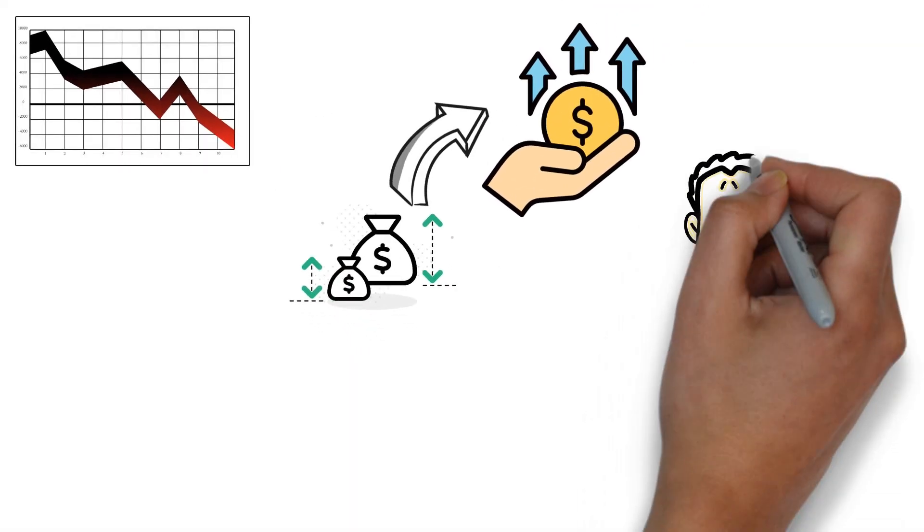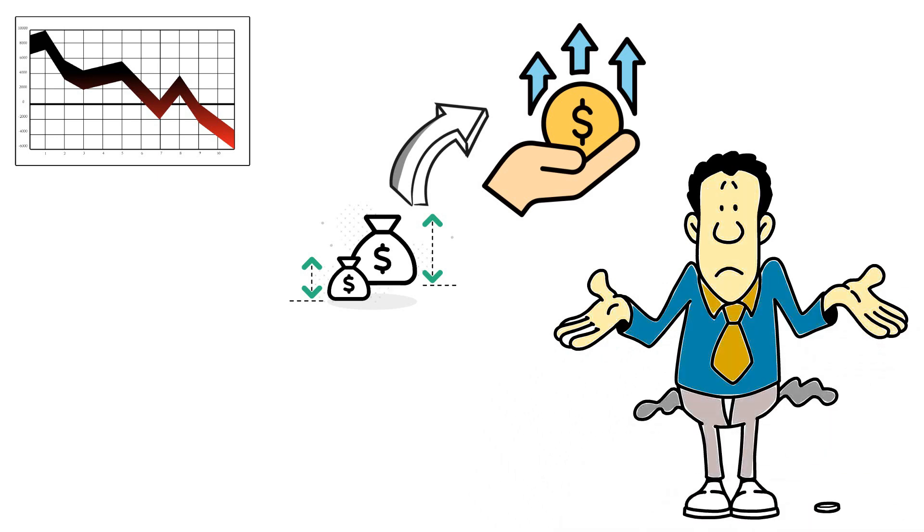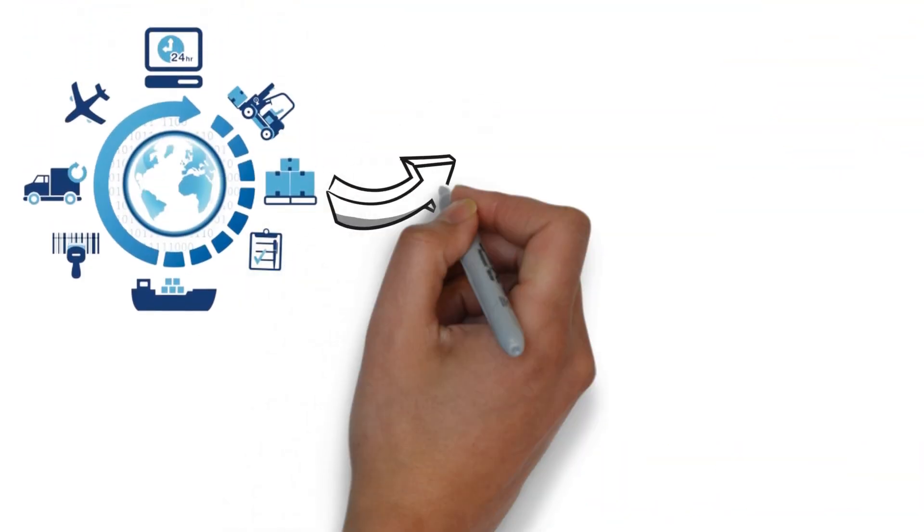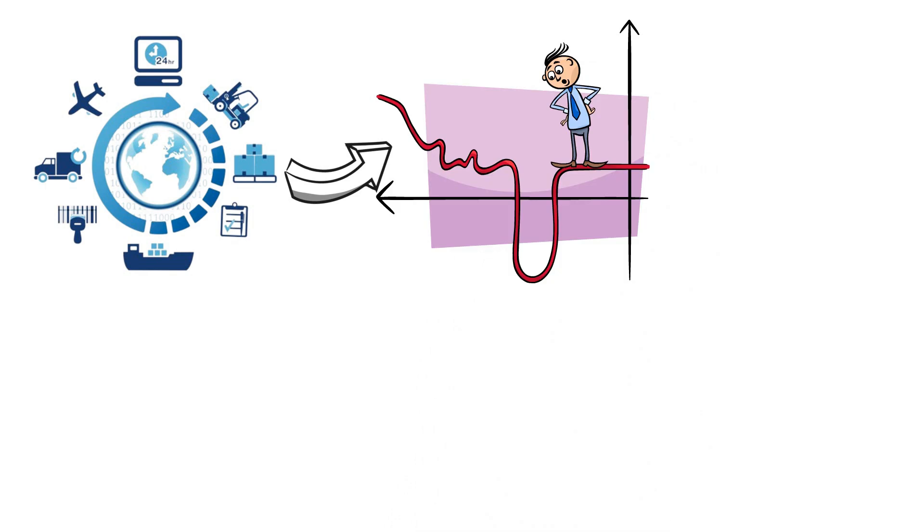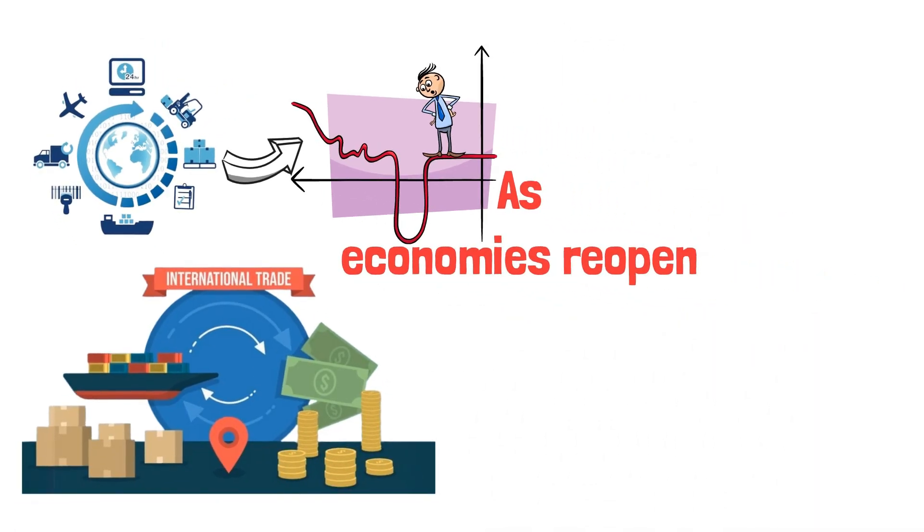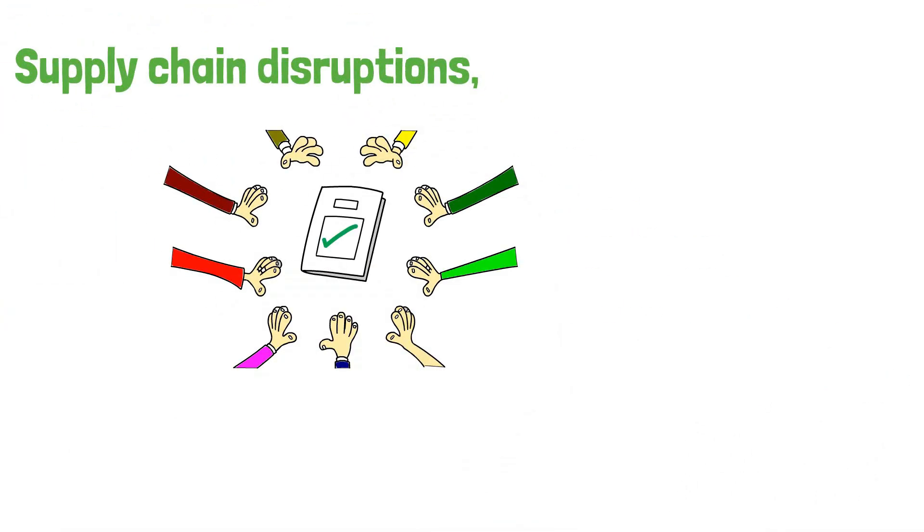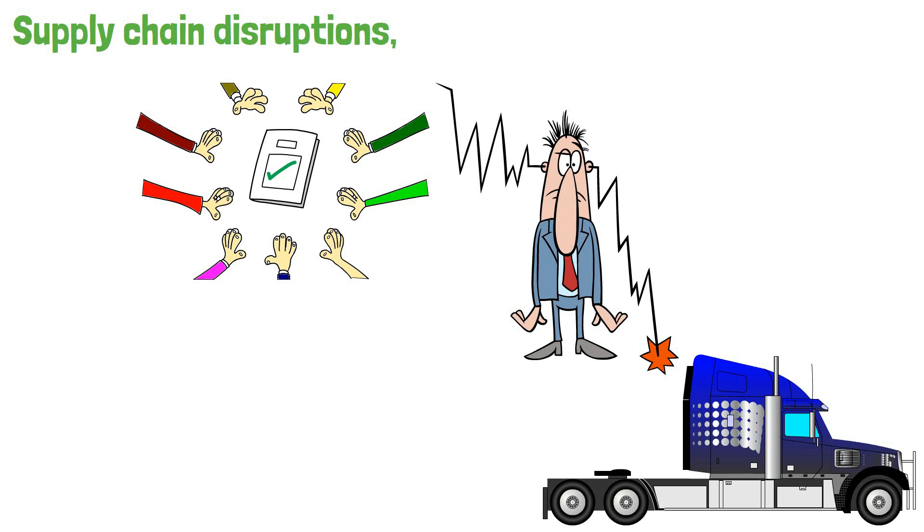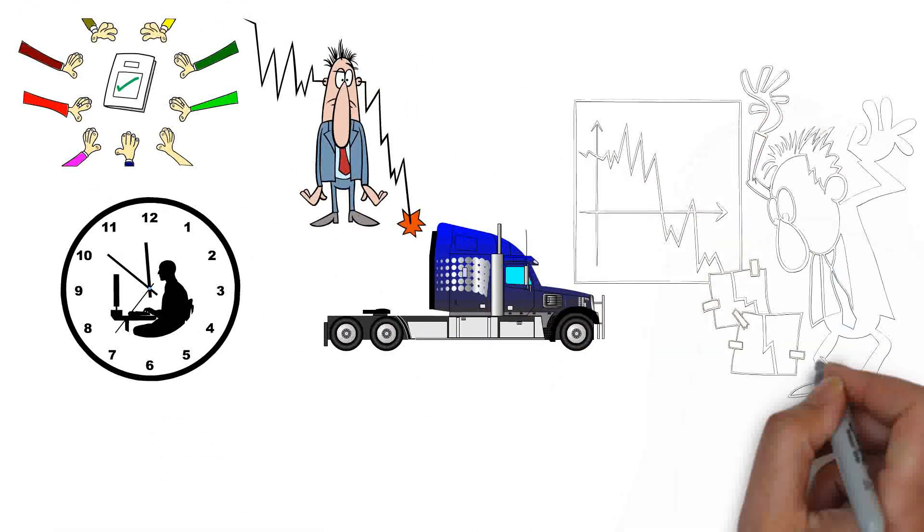The pandemic disrupted global supply chains, leading to shortages and bottlenecks. As economies reopen, trade dynamics are shifting. Supply chain disruptions, coupled with increased demand, can contribute to inflation. Higher transportation costs and delays in production exacerbate the situation.